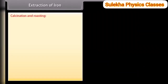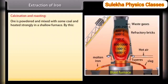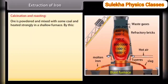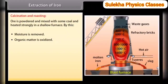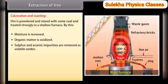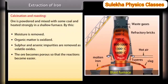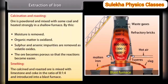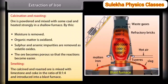Calcination and roasting: the ore is powdered and mixed with some coal and heated strongly in a shallow furnace. By this, moisture is removed, organic matter is oxidized, sulfur and arsenic impurities are removed as volatile oxides, and the ore becomes porous so that reactions become easier. Smelting: the calcined and roasted ore is mixed with limestone and coke in the ratio of 8:1:4 and introduced into a blast furnace.